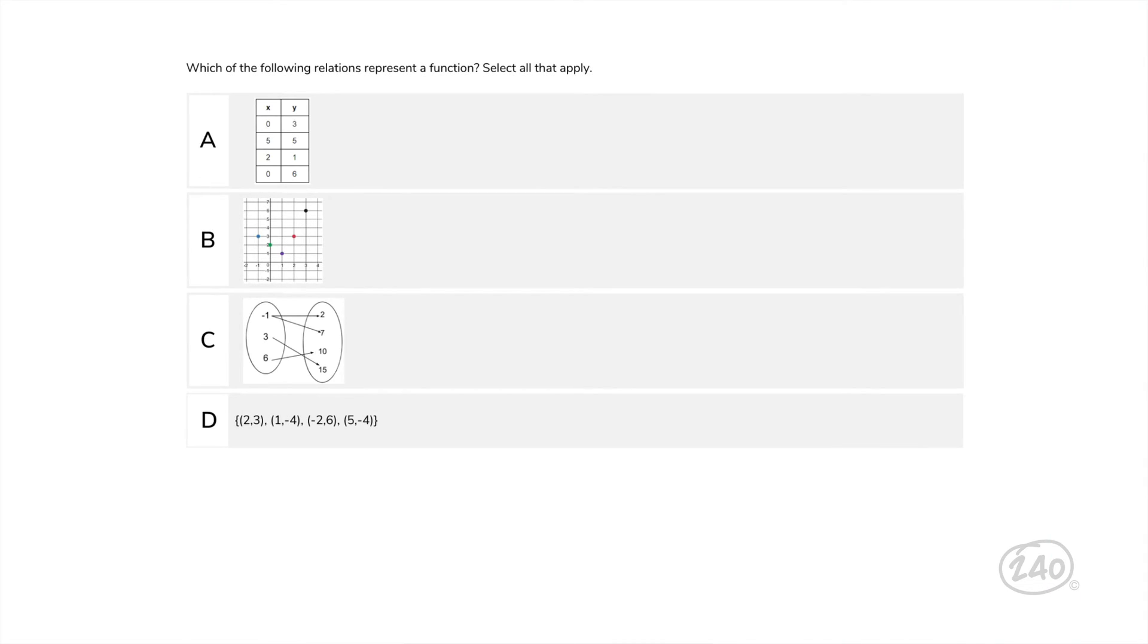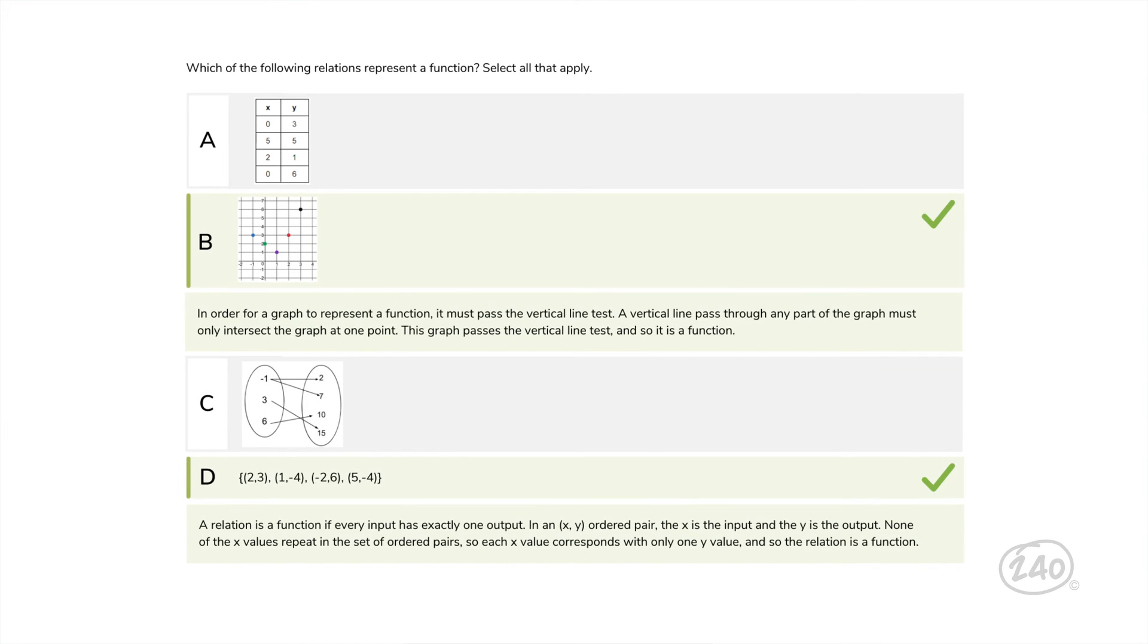What about those function questions? What do those look like? Which of the following relations represent a function? So in order for a number set to be a function, there can only be one output for every input. Or in other words, the x value can't repeat. So looking at choice A, there are two zeros in the x column, so it is not a function. In the next choice, each plotted point has a different x value, so it is a function. Then we move on and see that the input of negative 1 is connected to both 2 and 7. This means it is not a function. Finally, choice D has no repeating x values, so it is a function. So choices A and C are not functions, but choices B and D are functions.